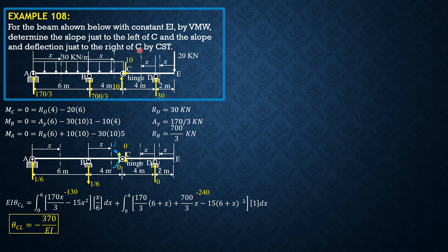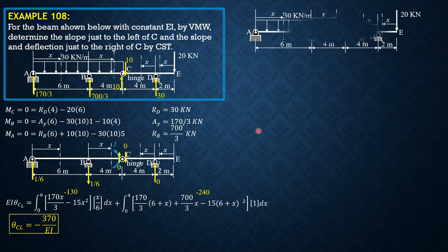Now let's apply Castigliano's second theorem to determine the slope just to the right and the deflection at C. For the slope, apply a couple C just to the right of C. Considering CDE: R_D times 4 plus C equals zero, so R_D equals negative C/4 or negative 0.25C. Therefore the reaction at D is 30 minus 0.25C.